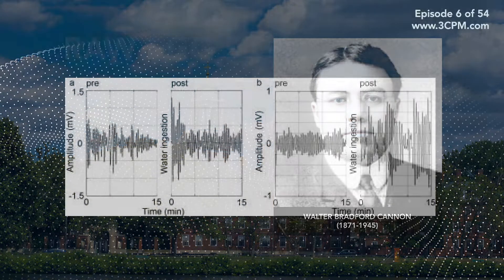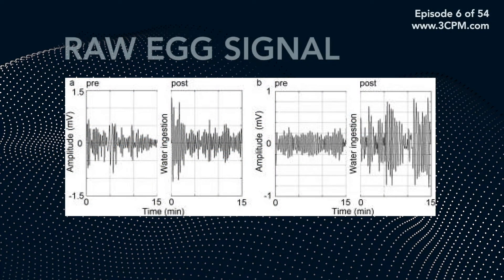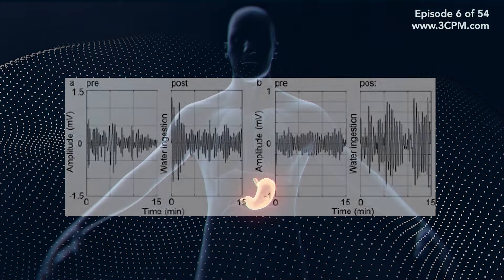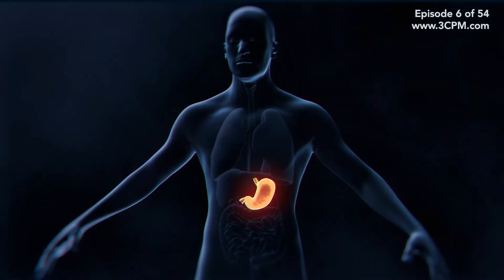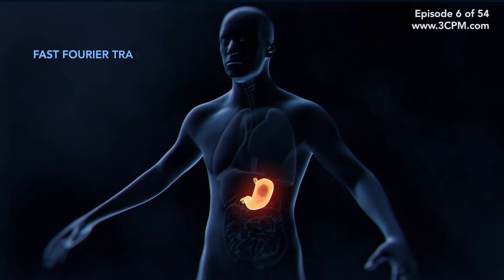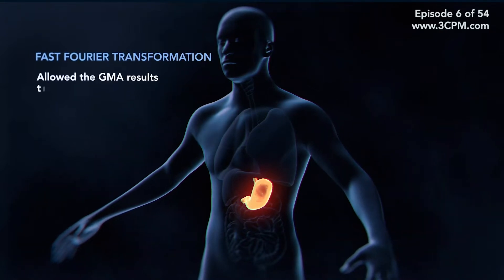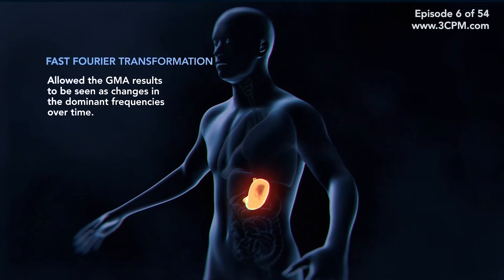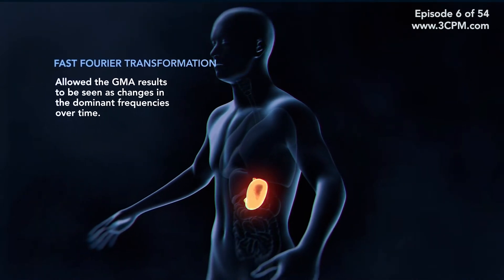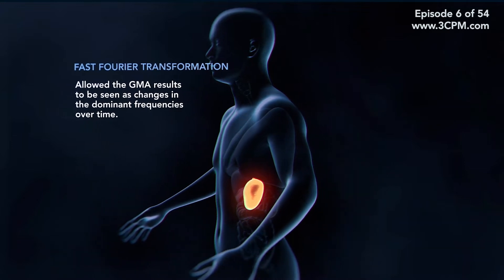Subsequently, the software methods gave rise to new techniques for examining the GMA. One of the earliest was the raw signal, which was useful but yielded little visually usable information. Additional statistical methods were applied, one known as the fast Fourier transformation, which allowed the GMA results to be seen as changes in the dominant frequencies over time.